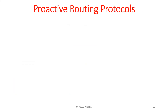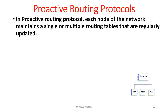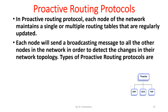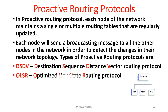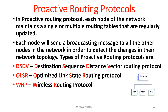Proactive routing protocols: in a proactive routing protocol, each node of the network maintains single or multiple routing tables that are regularly updated. Each node sends a broadcasting message to all other nodes in the network in order to detect changes in network topology. The types of proactive routing protocols are DSDV (Destination Sequence Distance Vector Routing Protocol), OLSR (Optimized Link State Routing Protocol), and WRP (Wireless Routing Protocol).